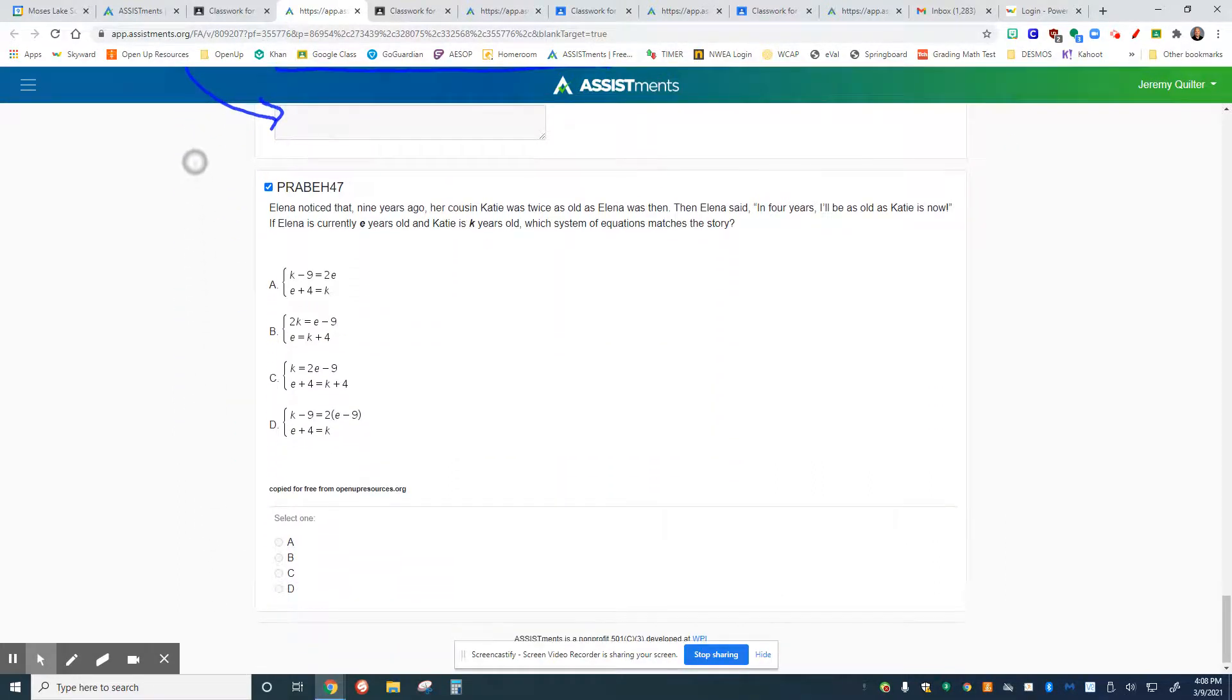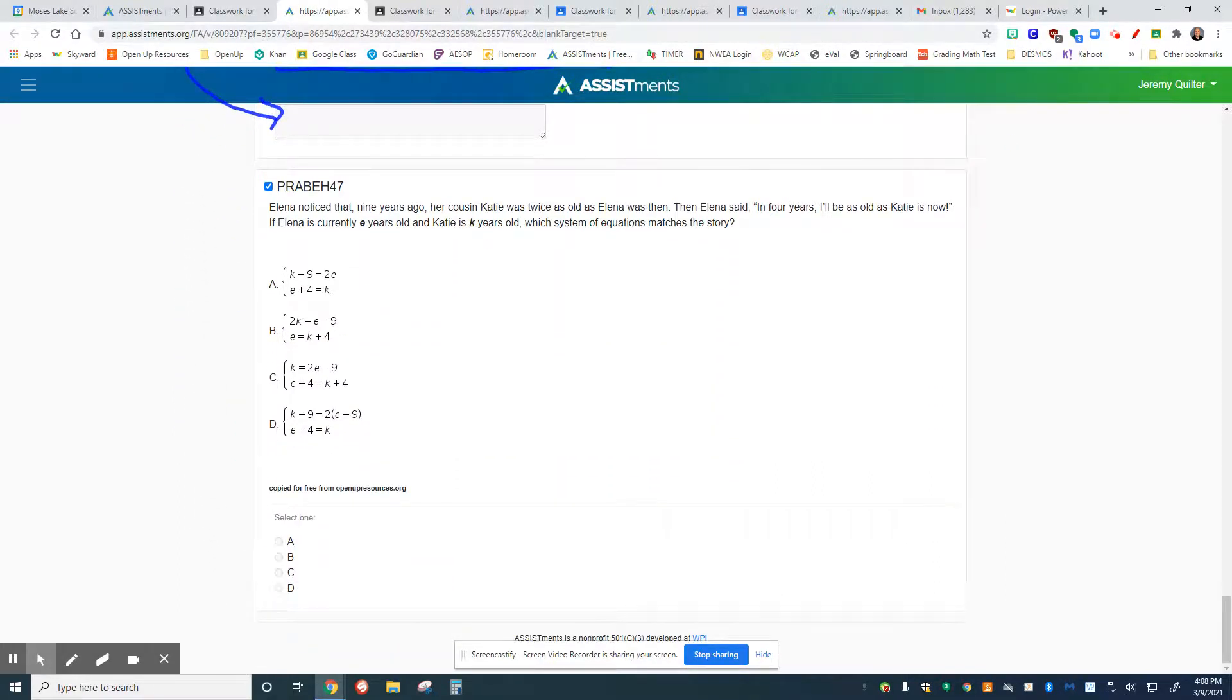The next question is a review question that comes to us from the previous unit talking about writing a system of equations. We're talking about Elena and her cousin Katie, and we're talking about their ages. So we have to recognize a couple of things here. First off, we have the variables.